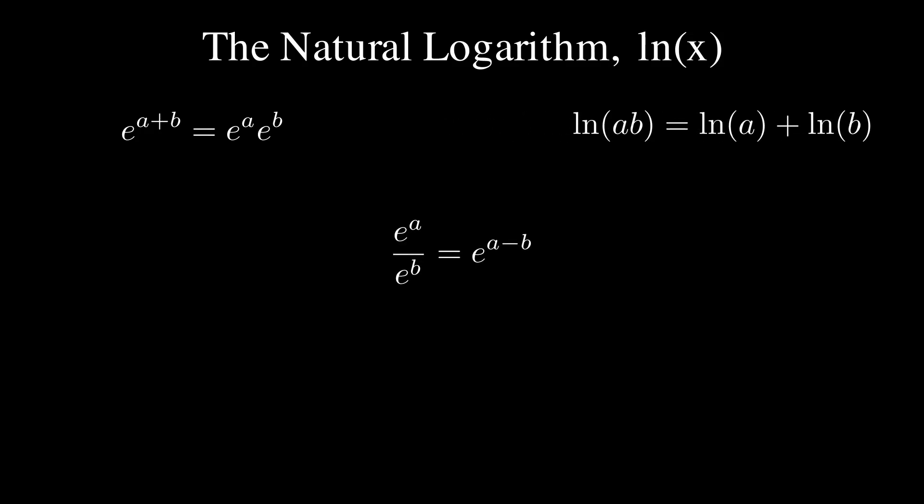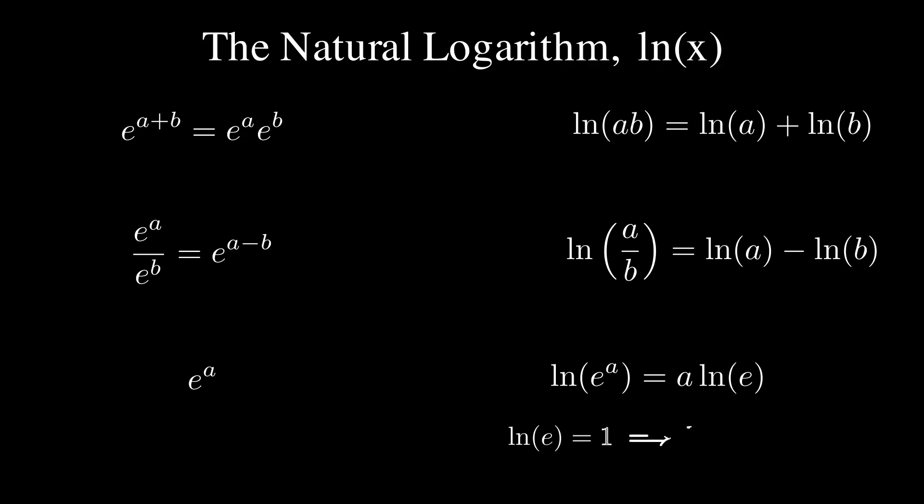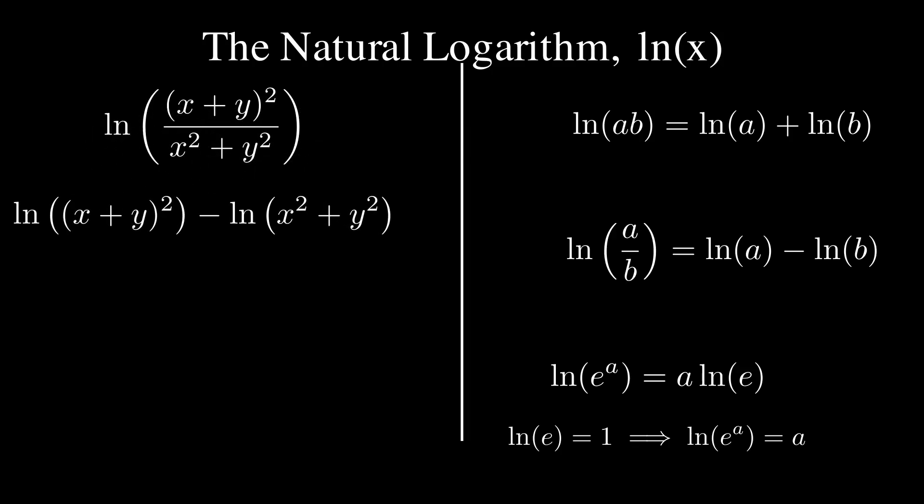This applies the same for differences and quotients. Lastly, when you have e raised to a power in the natural log, it becomes that power. This is because of the log power rule. We also want to know that ln(e) is equal to one. Let's simplify this log. So our first step is to apply the quotient to difference rule. Then we want to bring down the power by using the power rule, and that's our simplified answer.